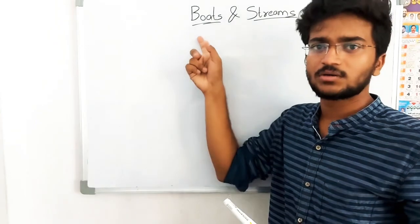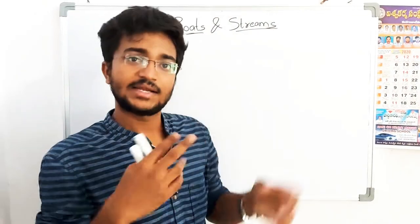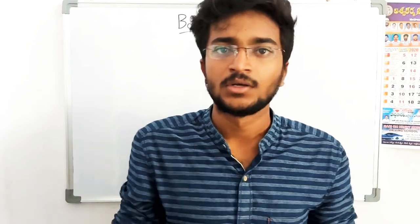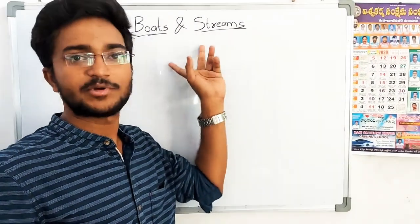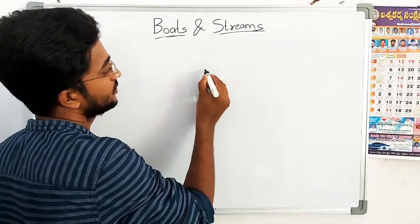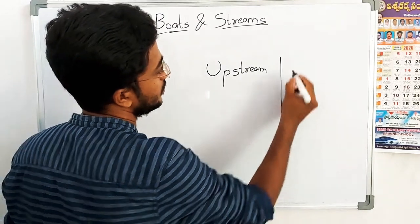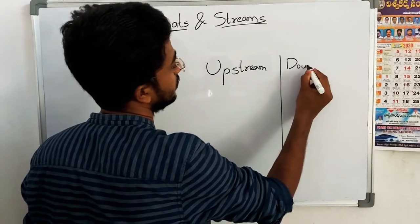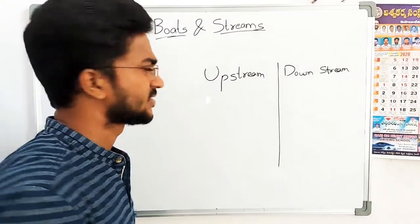So here we discuss the speed of the boat and the speed of the stream. The speed of the boat involves two different speeds at the same time. In time and distance there is a single speed, but in boats and streams we deal with two speeds simultaneously. In general, boats and streams involve two different concepts: one is upstream and the other is downstream.